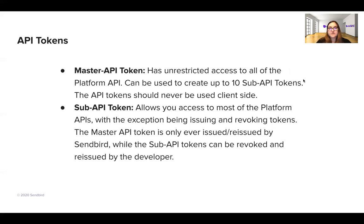For API tokens, you can have a master API token or sub-API tokens. There can only be one master token, but there can be up to 10 sub-API tokens. Sub-tokens are strongly recommended because they can be issued and revoked easily. Each developer could have their own sub-token, or you could have a service running on your back-end that has its own token as well.